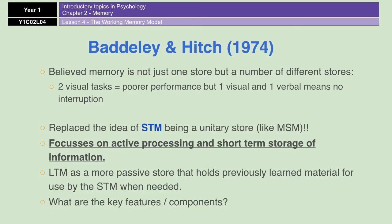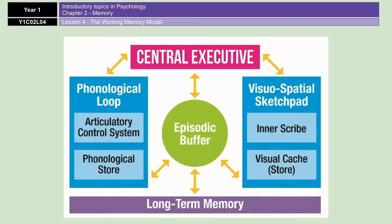We'll now have a little look at the key components and what the model looks like. You can see there are four main components, and then you've got long-term memory down the bottom. Interestingly, you've got all of these arrows that are double-headed, so if you think back to the multi-store model, very often you've just got a one-headed arrow — information goes from sensory memory to short-term memory but not back. Whereas with this one, everything is very much talking to each other with double-headed arrows all over the place.